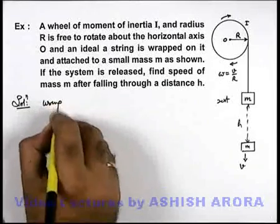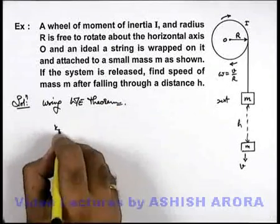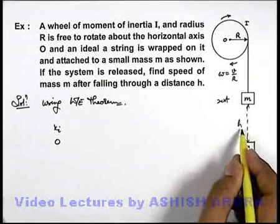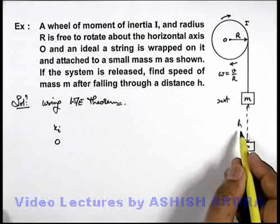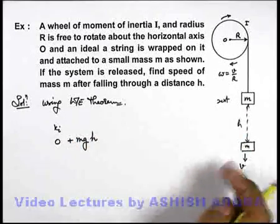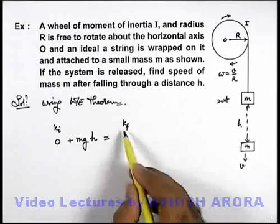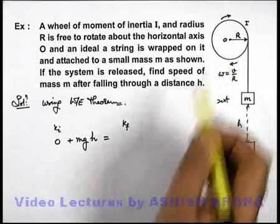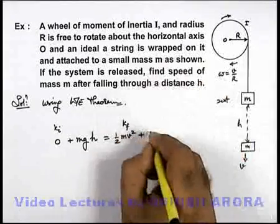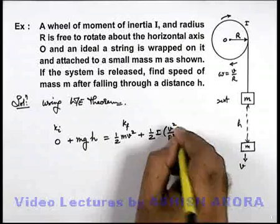Using the work-energy theorem, we can analyze that initial kinetic energy of the system was zero, and the only force which is doing work in the situation is gravity, or the weight acting on the block of mass m. So it can be written as m·g·h, if h is the height to which it has fallen, must be equal to the final kinetic energy, which is the sum of kinetic energies of the block as well as that of the wheel. The block will have a kinetic energy half m v squared, plus the kinetic energy of the wheel, half I omega squared. Omega we can write as v/r, so it is v squared by r squared.